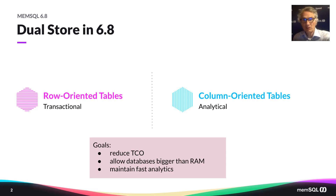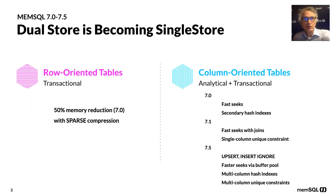What we wanted to do was achieve all these goals with a change to the system that would give us outstanding total cost of ownership, allow databases bigger than RAM, and maintain really fast analytical performance. So how do we do it?